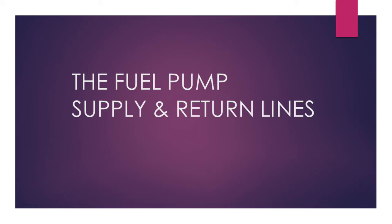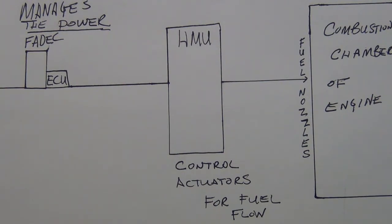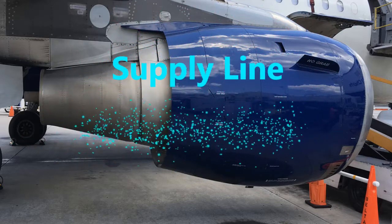Where is the engine fuel pump located? Many components are located on the accessory gearbox. In this particular case, the engine fuel pump is on the left side of the drive shaft housing. There's a supply line and a return line. The fuel supply line is routed through a hydraulic junction box near the engine — routed from the junction box on the fan inlet case, then down to the fuel pump inlet.